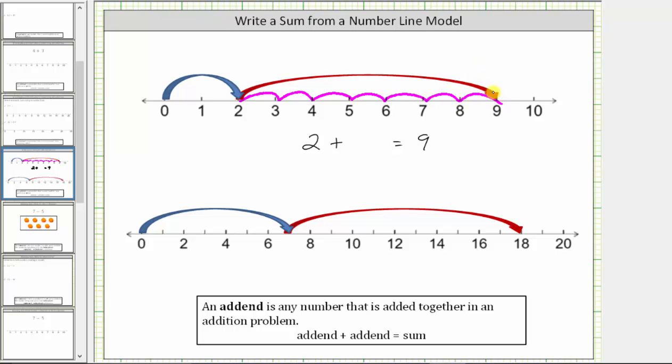We moved seven units to the right of two, which means seven is the second addend, giving us the addition problem two plus seven equals nine. Another way to think of this model is two increased by seven is nine.